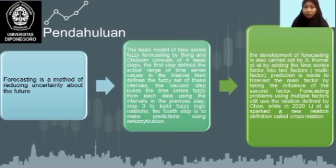The second step is to build the time series fuzzy from each data using the intervals in the previous step. Step number three is to build the fuzzy logic relation, or what we call FLR, and the fourth step is to make prediction using defuzzification.